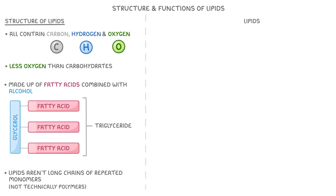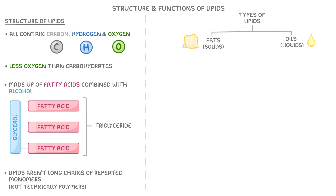You might hear the terms lipids, fats and oils being used interchangeably, but there are some key differences to remember. Fats and oils are actually just types of lipid that have different properties because of the fatty acids that they contain. For instance, fats are solids at room temperature, whilst oils are liquids.